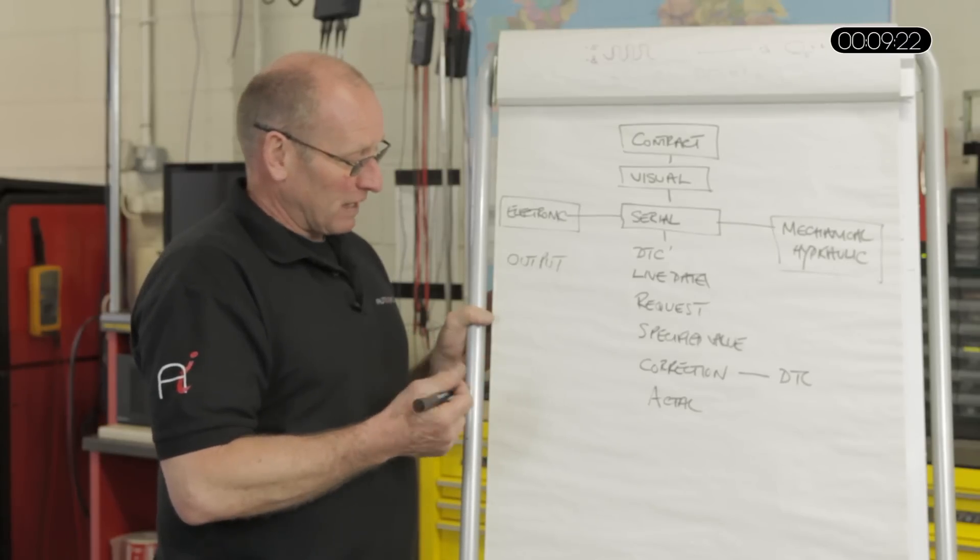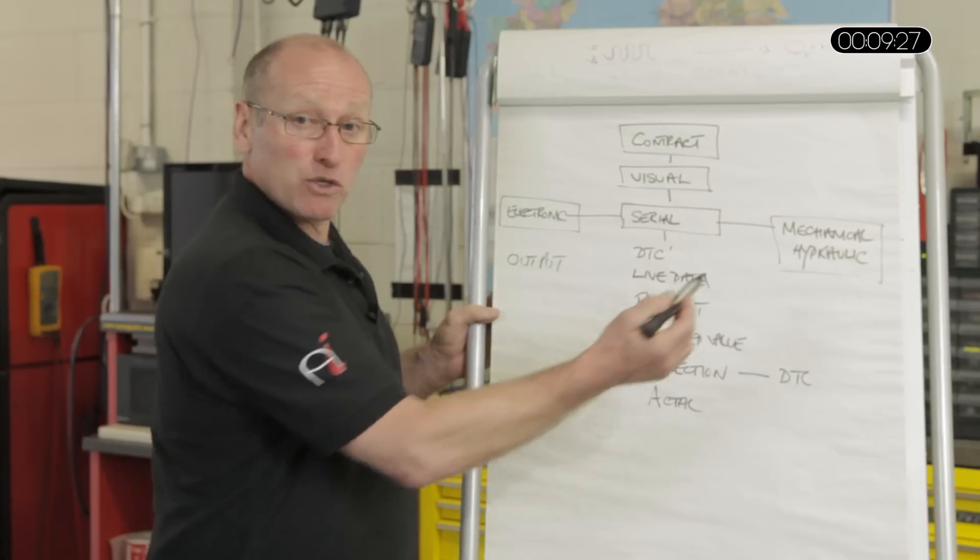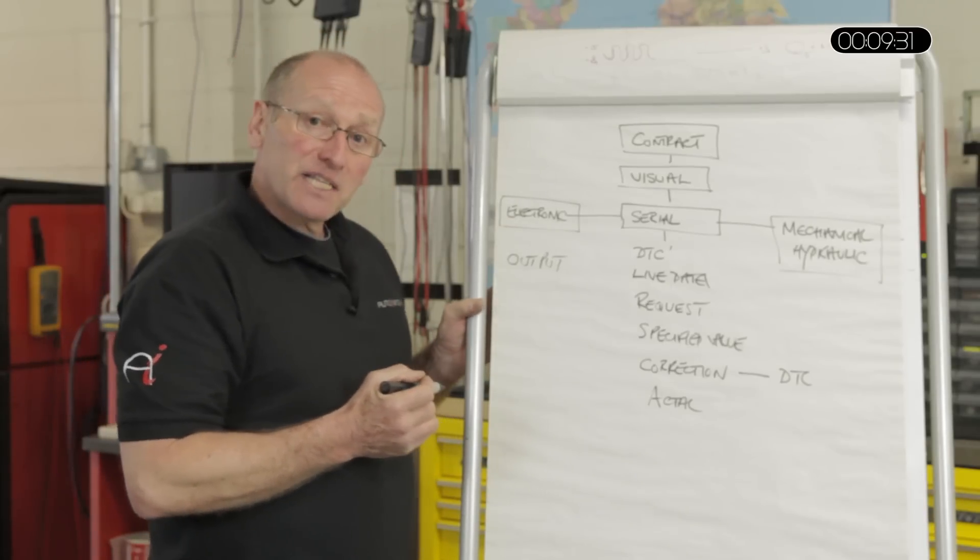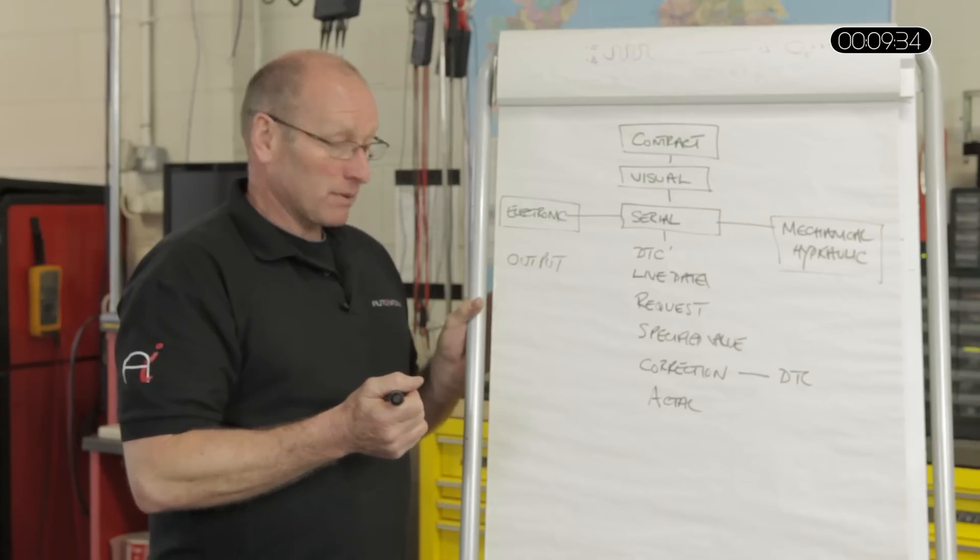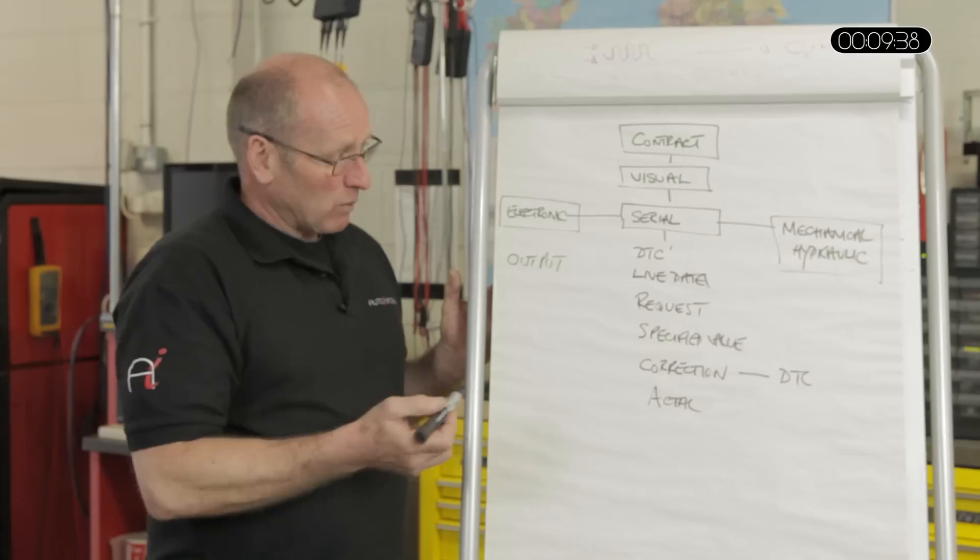So the output value of, shall we say, a fuel pump is hydraulic, it's pressure and flow, that would come under the mechanical route. If that's defective, the next functionality of a fuel pump is the current flow through the circuit. And that will be the second check.